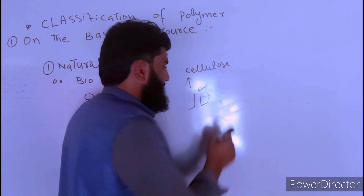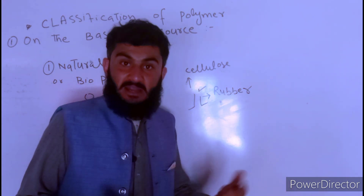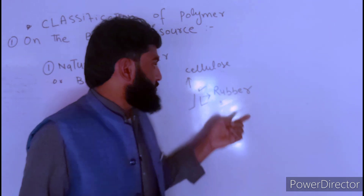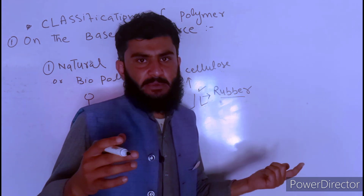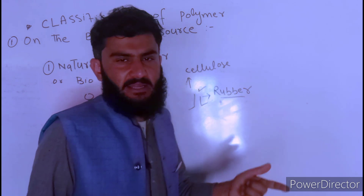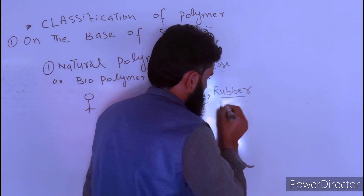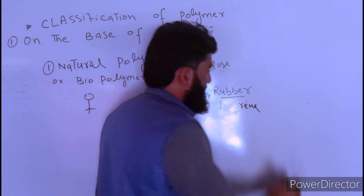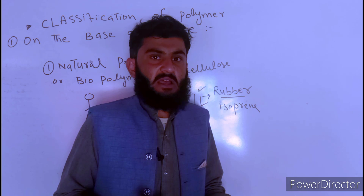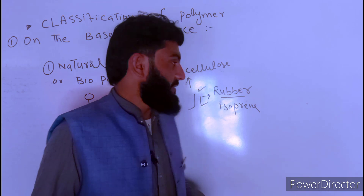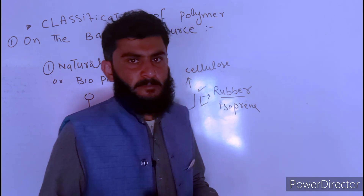Another thing obtained from plants is rubber. Rubber is a natural polymer obtained directly from plants, and it is composed of the monomer isoprene. We will discuss the different pathways and the structure of the polymer as well as the monomers.